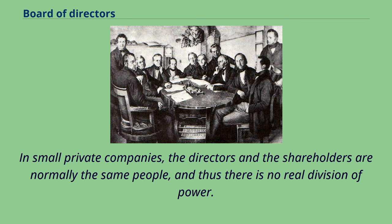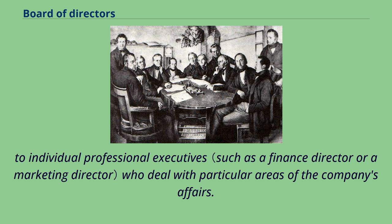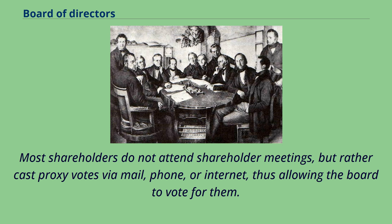In small private companies, the directors and the shareholders are normally the same people, and thus there is no real division of power. In large public companies, the board tends to exercise more of a supervisory role, and individual responsibility and management tends to be delegated downward to individual professional executives. Another feature of boards of directors in large public companies is that the board tends to have more de facto power. Most shareholders do not attend shareholder meetings, but rather cast proxy votes via mail, phone, or internet, thus allowing the board to vote for them.